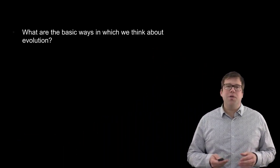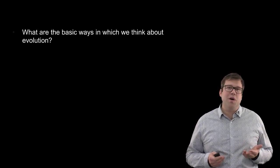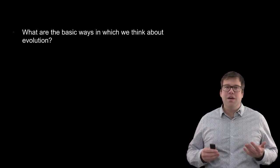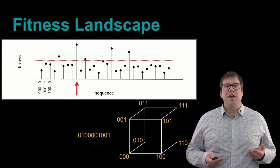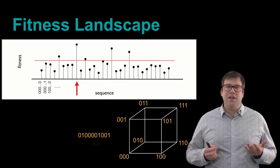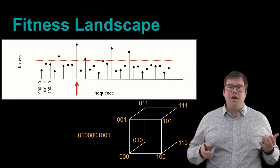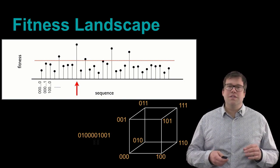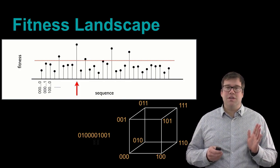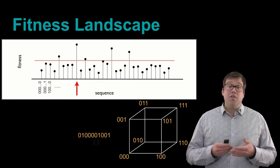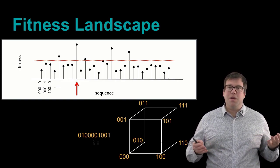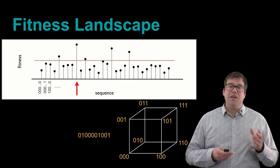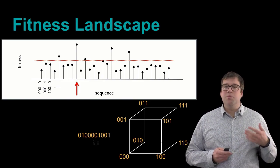In the last lecture, we started to talk about selection theory in general. One of the overarching questions of this course is: what are the basic ways in which we think about evolution, and how do we use those general ideas to understand the origins of life? We introduced the concept of a fitness landscape, thinking about all the different sequences that can exist in a genome — represented in simple zeros and ones — where each sequence has a distinct fitness, and we described a high-dimensional hypercube linking all sequences in sequence space.